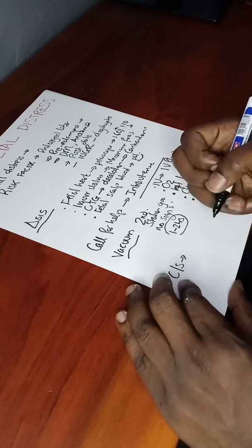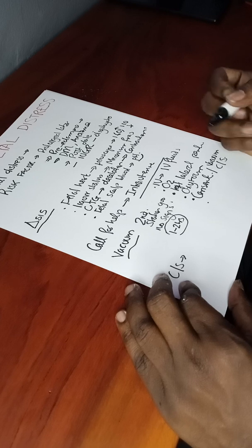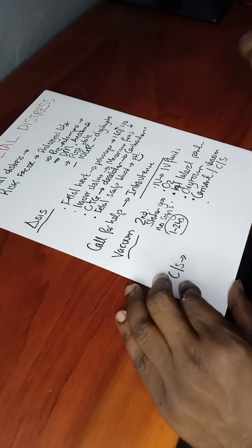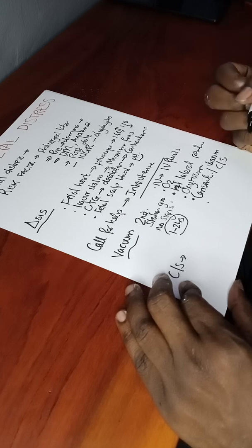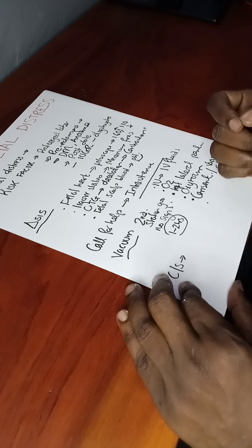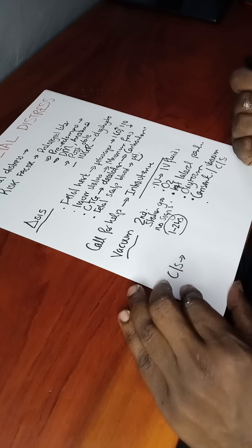For caesarean section, you need an experienced anesthetist so that anesthesia is done quickly, and an experienced surgeon so that you don't take long extracting the baby while it's in distress, because you can end up with a severely asphyxiated baby or fetal death. That is generally how we deal with fetal distress on the labor ward.